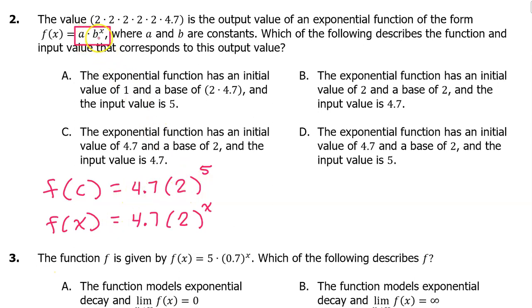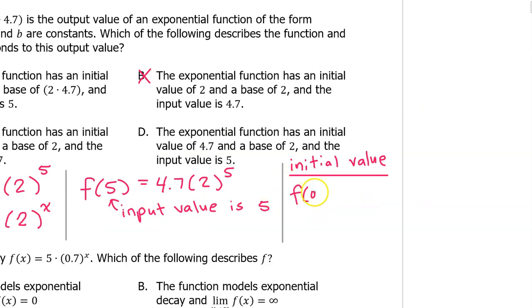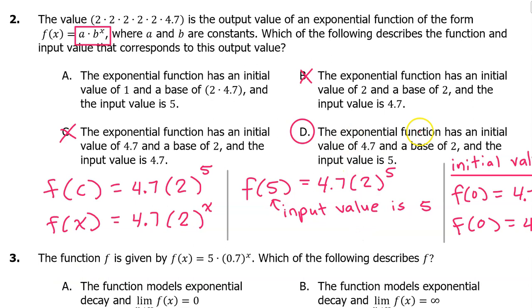Comparing the output expression to the model, it looks like a = 4.7 and b = 2. Therefore the 5 must be x, meaning f(5) = 4.7·2^5. So 5 is our input value c. We can eliminate options C and B because they say the input value is 4.7. We find the initial value by evaluating f(0) = 4.7·2^0 = 4.7·1 = 4.7. So the initial value is 4.7, and the answer is D — the exponential function has an initial value of 4.7, a base of 2, and an input value of 5.